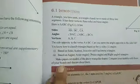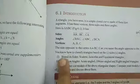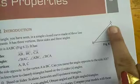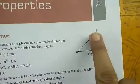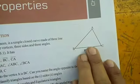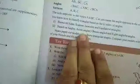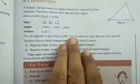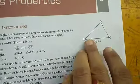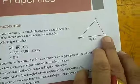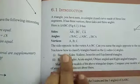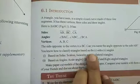The side opposite to vertex A is BC. The angle opposite to side AB is angle C. So you know how to classify triangles based on sides and angles.